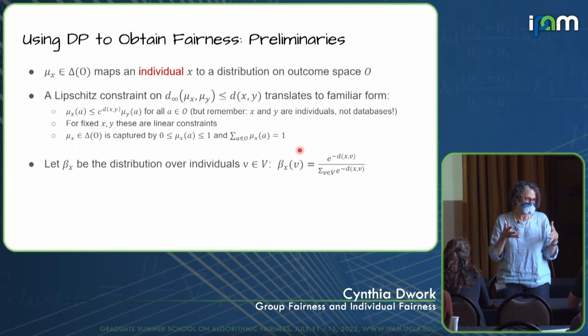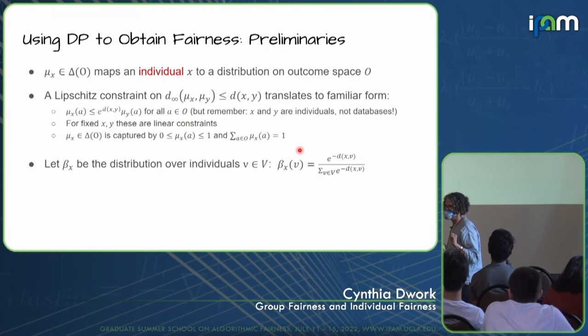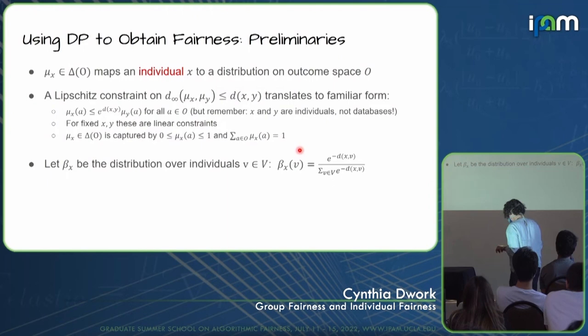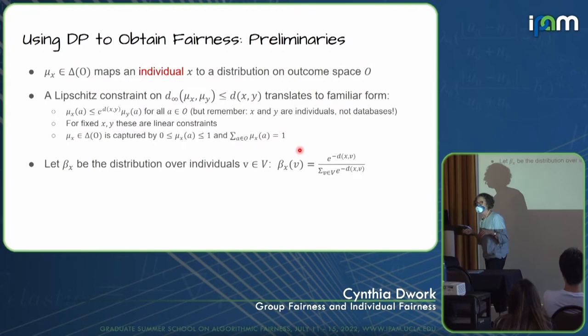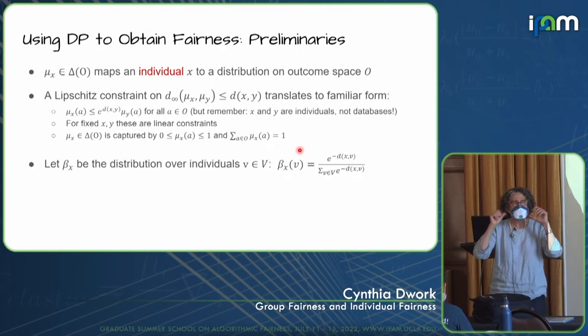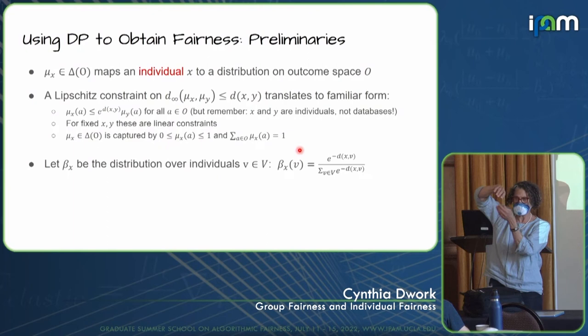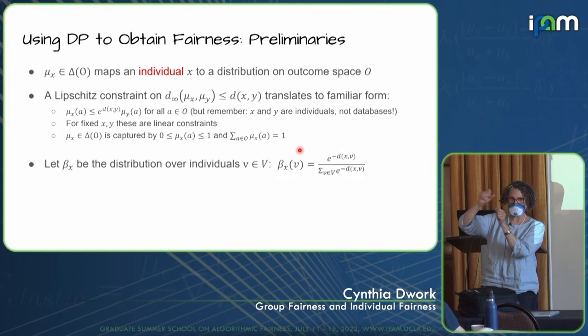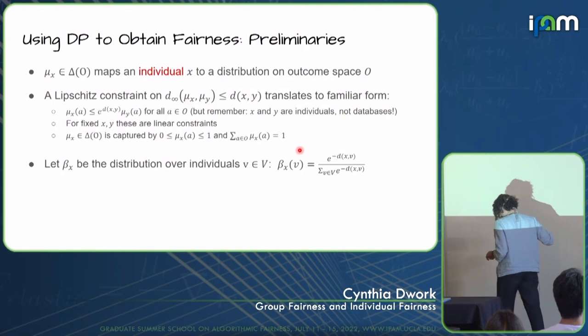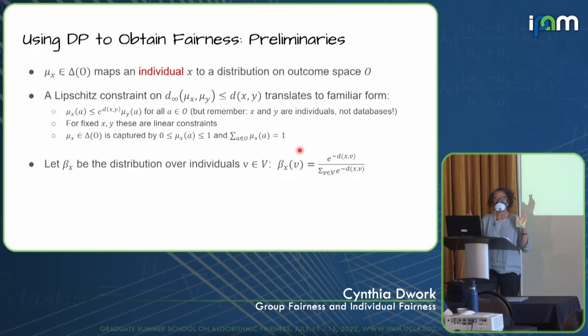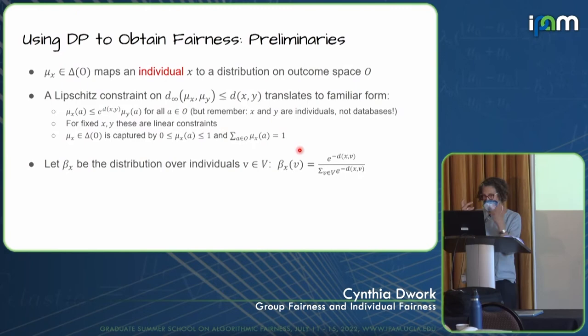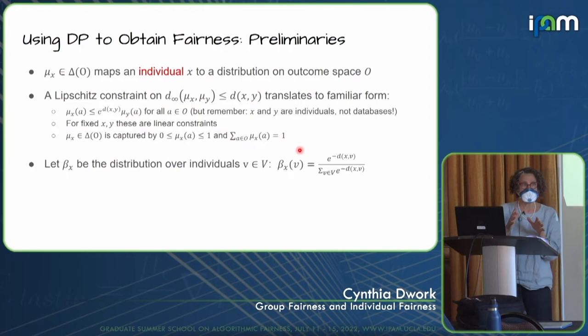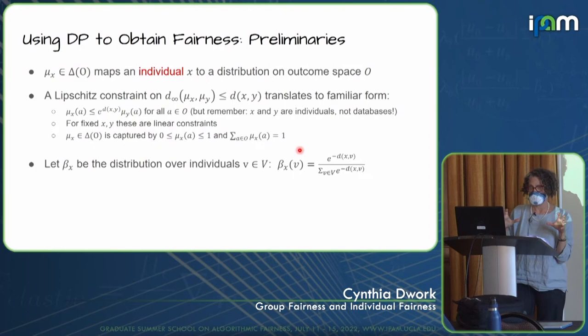Notice that we're getting fairness from this, but not promising that the outcomes are great or wonderful. This is just for fairness. The initial step assigns to each point a distribution, then we smush people around using the exponential mechanism to choose which distribution to apply. We're not guaranteeing correctness of outcomes, just that similar people are mapped similarly. We use the following notation: let beta-x be the distribution over individuals given by the exponential mechanism. The probability of mapping x to v is e to the minus d of x comma v, normalized over all possible v. The denominator — call it n sub x — is at least one since the distance from x to itself is zero.